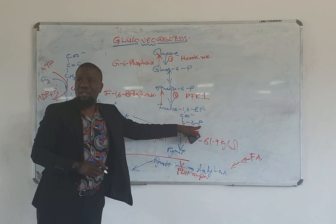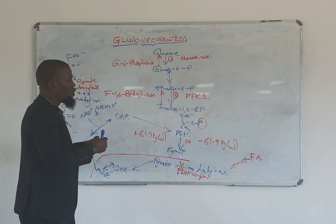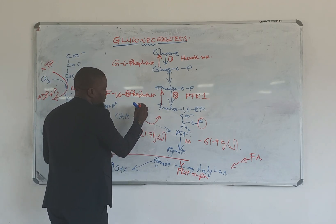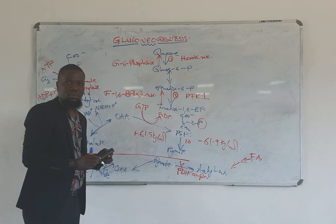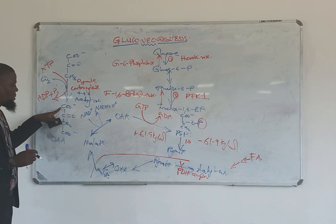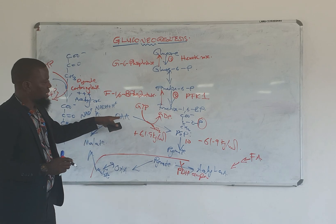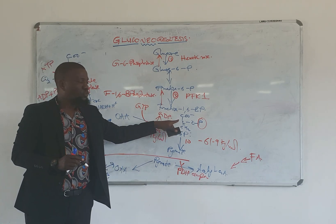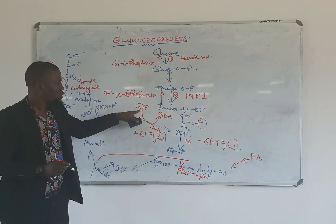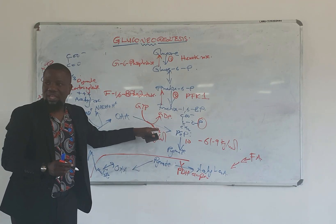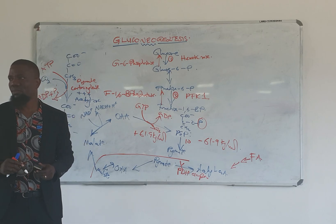The oxaloacetate is then converted into phosphoenolpyruvate. This oxaloacetate has four carbons and no phosphate, while phosphoenolpyruvate has three carbons and a phosphate. So this reaction requires an additional phosphate — which comes from GTP, which is converted to GDP. In the process, carbon dioxide is released, and the end result is production of phosphoenolpyruvate from oxaloacetate. The enzyme acting here is phosphoenolpyruvate carboxykinase (PEPCK).